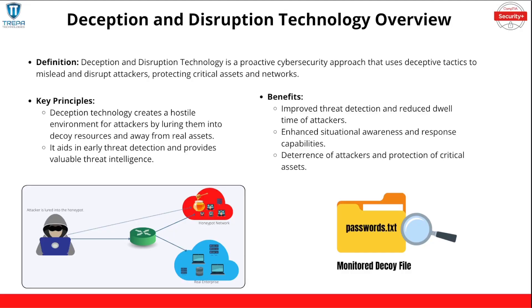The first thing we're going to go over is just the key definition of deception and disruption technologies. Deception disruption technology is a proactive cybersecurity approach that uses deceptive tactics to mislead and disrupt attackers, protecting your critical assets and networks. Think of anything that's deception or disruption — a technique, a technology, or maybe even a physical appliance — that's going to lure the attacker away from your production environment.